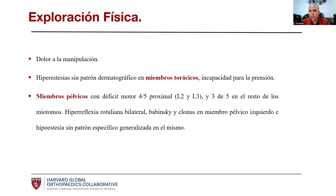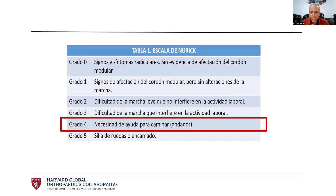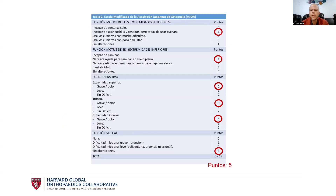A la exploración física, cualquier prueba le duele cuando se manipula. Se determinan hiperestesias sin un patrón dermatográfico en los miembros torácicos, hay incapacidad para la presión. En los miembros pélvicos hay un déficit motor de 4/5 proximal y 3/5 en el resto de los miotomas. Se observan datos de mielopatía: hiperreflexia bilateral, Babinski, clonus en el miembro pélvico izquierdo, e hipoestesia generalizada sin patrón específico en esa extremidad. Se clasifica como Nurick 4 con una puntuación en la escala de la Asociación Japonesa Modificada de 5 puntos. La función vesical es lo único íntegro.